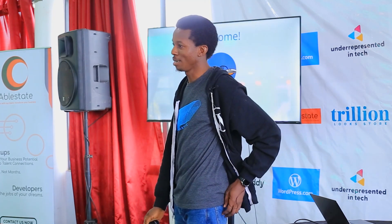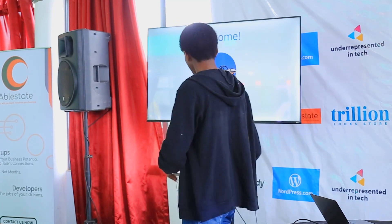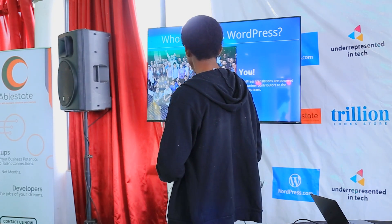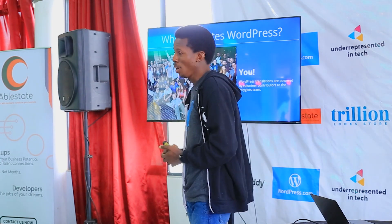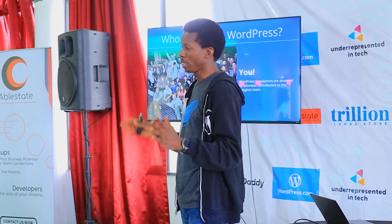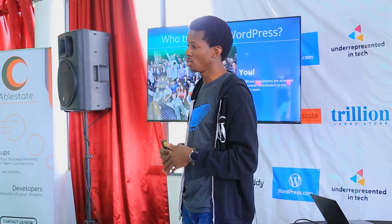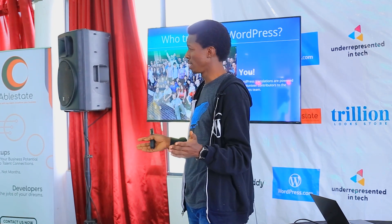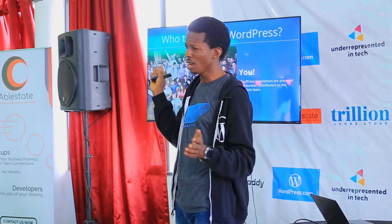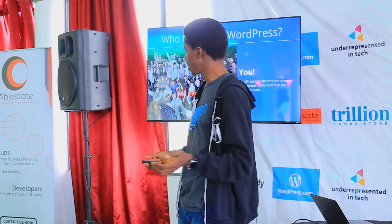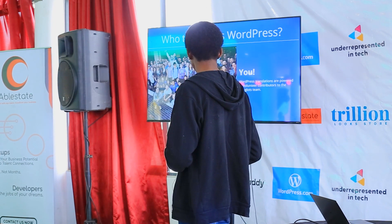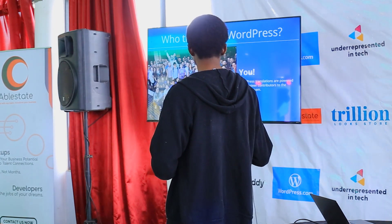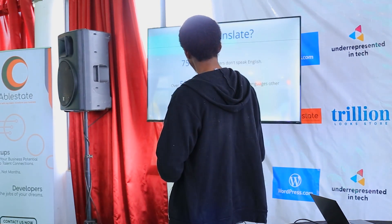My name is Tosni Ogute, I'm a software engineer at Automattic. So who translates WordPress? The answer is you. Many WordPress projects that have been translated are done by individual contributors from all over the world — close to about 60,000 people contributing in different languages. WordPress translations are powered by volunteer contributors to the Polyglot team.